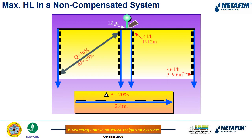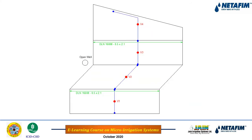The 10-20 rule for non-pressure compensated drippers states: allow a maximum 10% discharge variation or 20% pressure variation within shift areas. This corresponds to a maximum pressure difference of 2.4 m between the last dripper and the manual valve. In the proposed arrangement, the sub-main is placed at the center of the field so each lateral run is less than 88 m; manual valves are placed at the center of the sub-main, with flush valves at each end.